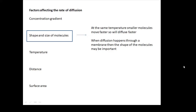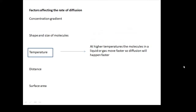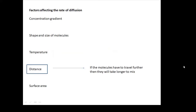The shape of the molecules could have something to do with the membrane. Some membranes are semi-permeable, and whether the molecules can get through the little holes in the membrane has something to do with their shape. Temperature: at higher temperatures, the molecules are moving faster, so diffusion will happen faster. Distance: if the molecules have to travel further, then they will take longer to mix.